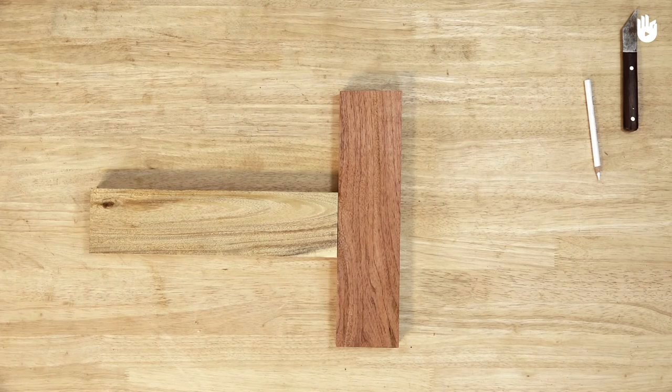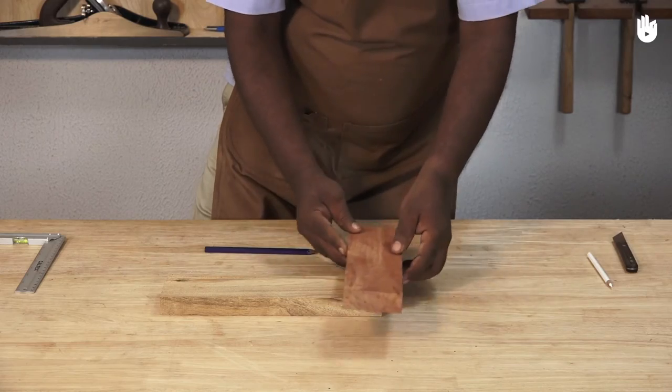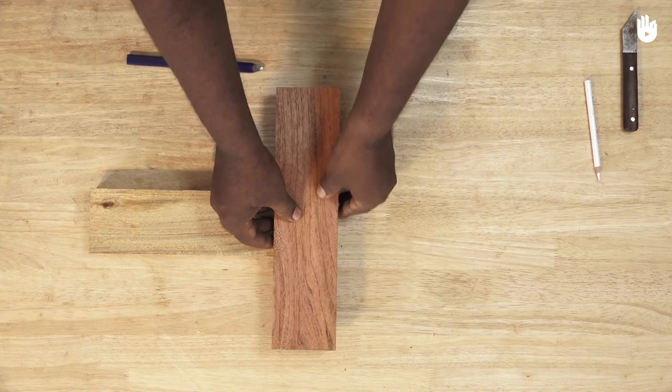Ensure that both work pieces are of identical shape and size with square sides. Place one of the pieces perpendicular and in line with the end grain of the other.